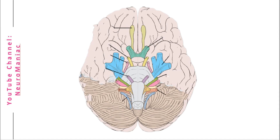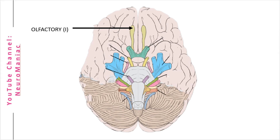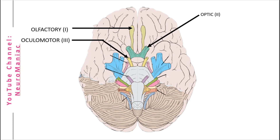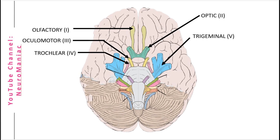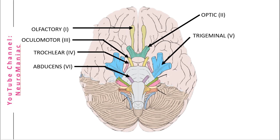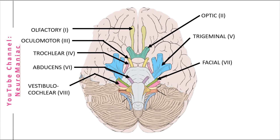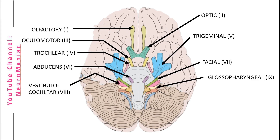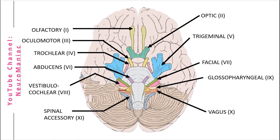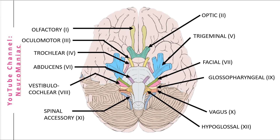Let's take a moment to label them here. Cranial nerve 1 is the olfactory nerve, 2 the optic nerve, number 3 the oculomotor, 4 trochlear, 5 the almighty trigeminal, 6 is the abducens, 7 the facial nerve, 8 the vestibulocochlear, 9 glossopharyngeal, 10 the vagus nerve, number 11 the spinal accessory, and finally number 12 the hypoglossal nerve.